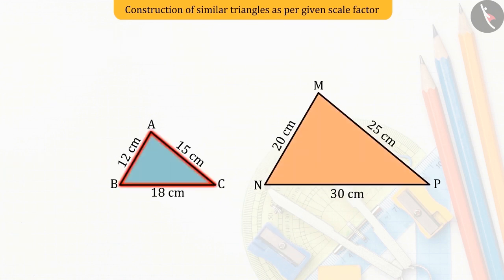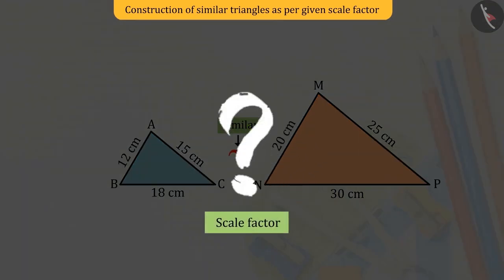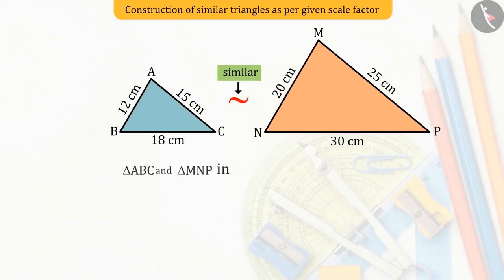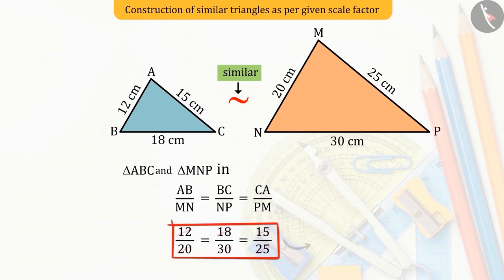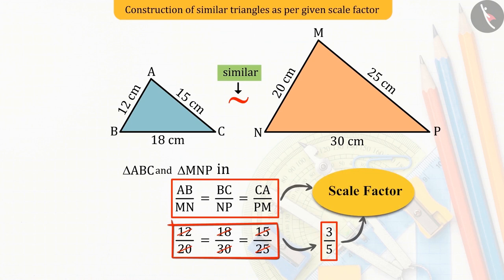Triangle ABC and triangle MNP are similar. Let's find the scale factor between these two triangles. You can see that the ratio of the corresponding sides of the two triangles is 3 is to 5. This ratio between the corresponding sides of the similar triangles is known as the scale factor.